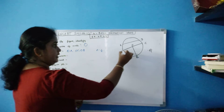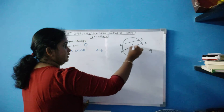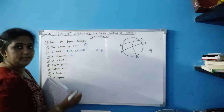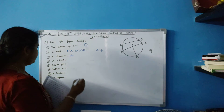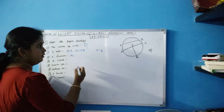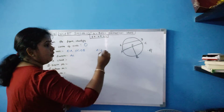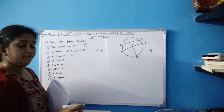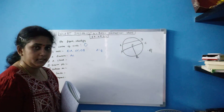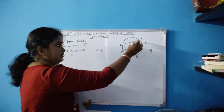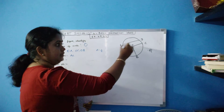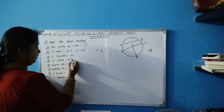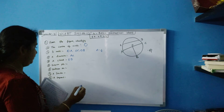And the diameter — see, the line passing through the center of the circle is your diameter. So that is AC; AC is your diameter. Next, a chord: ED is a chord. A chord does not necessarily pass through the center, but if it does pass through the center it is also a chord. Here ED is a chord — a line passing through the circle.